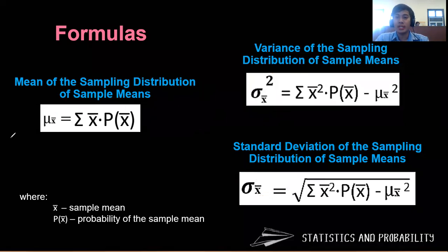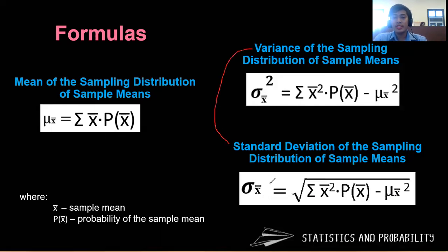Here are the formulas. To get mu sub x-bar, we use the summation of x-bar times the probability of the sample mean x-bar. To get the variance of the sampling distribution of the sample means, sigma squared sub x-bar is equal to the summation of x-bar squared times the probability of x-bar, minus mu sub x-bar squared. And to get the standard deviation, simply take the square root of the variance.